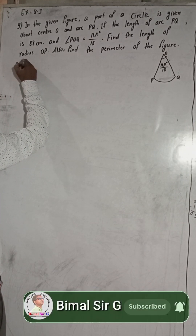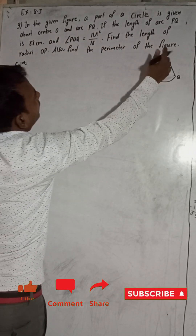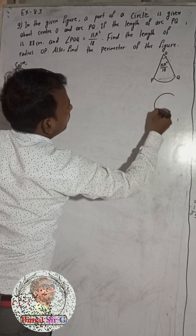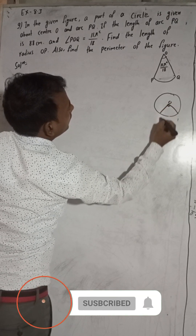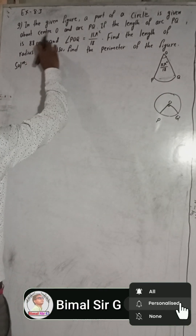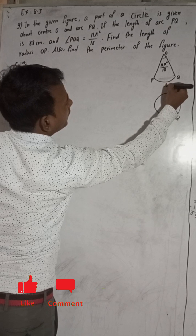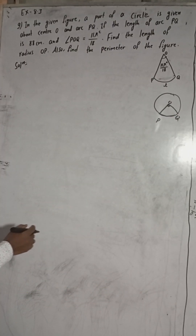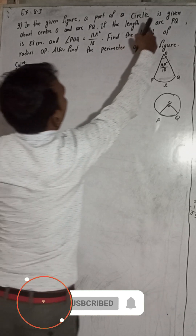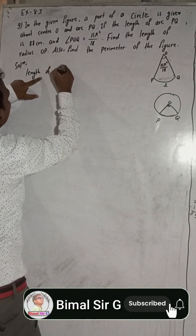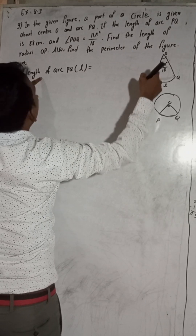So now let us move to our solutions. In the given figure, a part of a circle is given about center O. This is the part of the circle — suppose this is our circle about O. So the part meets up here and here. This is PQ, this is the part of the circle about center O, and this is arc RPQ — this is the length here.